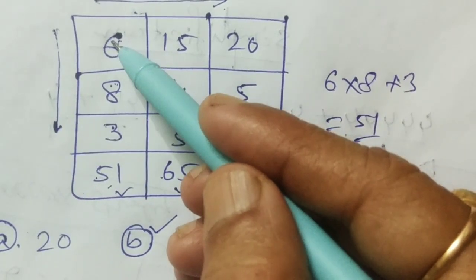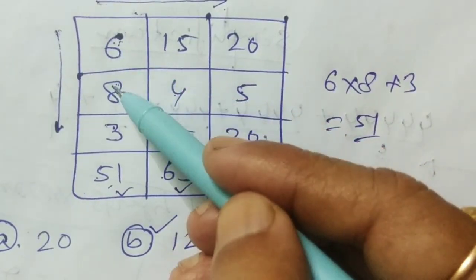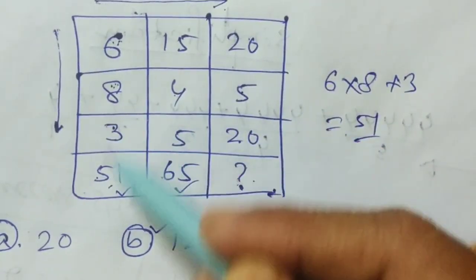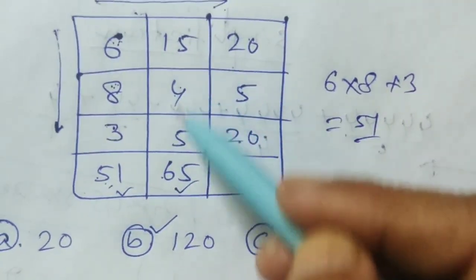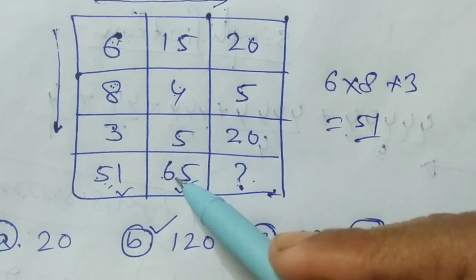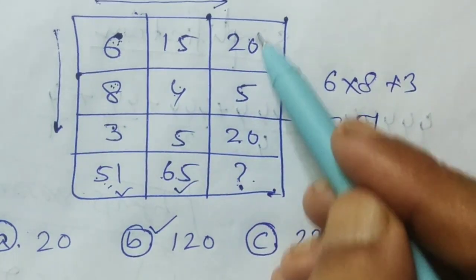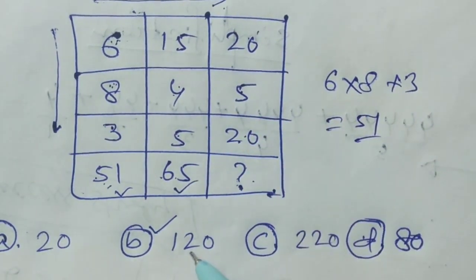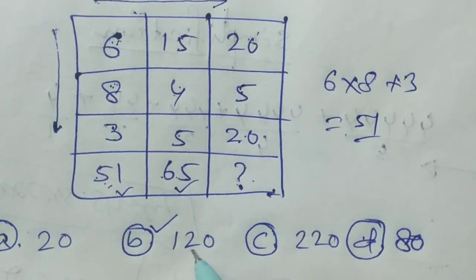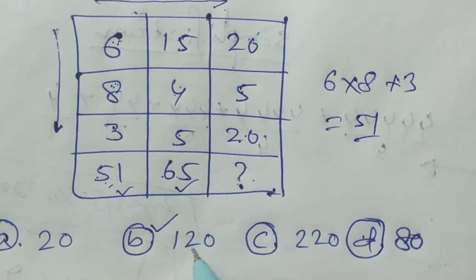So to summarize: 6 × 8 + 3 = 51, 15 × 4 + 5 = 65, and 20 × 5 + 20 = 120 is the answer.